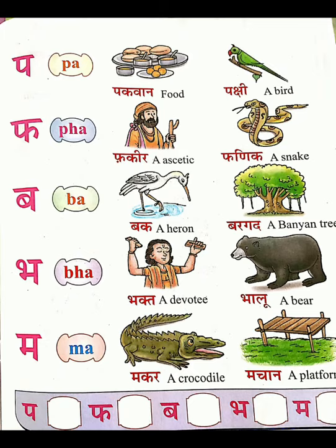Letter MA, M-A. 'Makar', M-A-K-A-R-A — a crocodile, C-R-O-C-O-D-I-L-E. Crocodile. Then MAA.